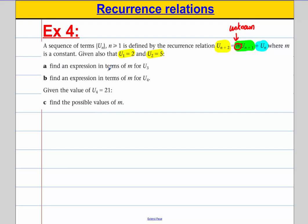So part a, find an expression in terms of m, so leaving m in it for u3. So part a, we know that u1 is equal to 2. We also know that u2 is equal to 5 and we can use the recurrence formula here. u3 is m times the one just before it, so m times u2 plus the one 2 before it, u1.